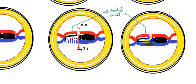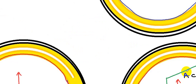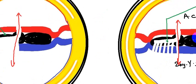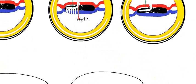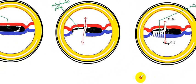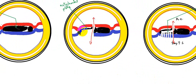The floor of the notochordal canal will degenerate and disappear, forming a free communication between the amniotic cavity and the secondary yolk sac. This connection is called the neurenteric canal, between the amniotic cavity and the secondary yolk sac. Remember that this is the notochordal plate — the roof of the notochordal canal.